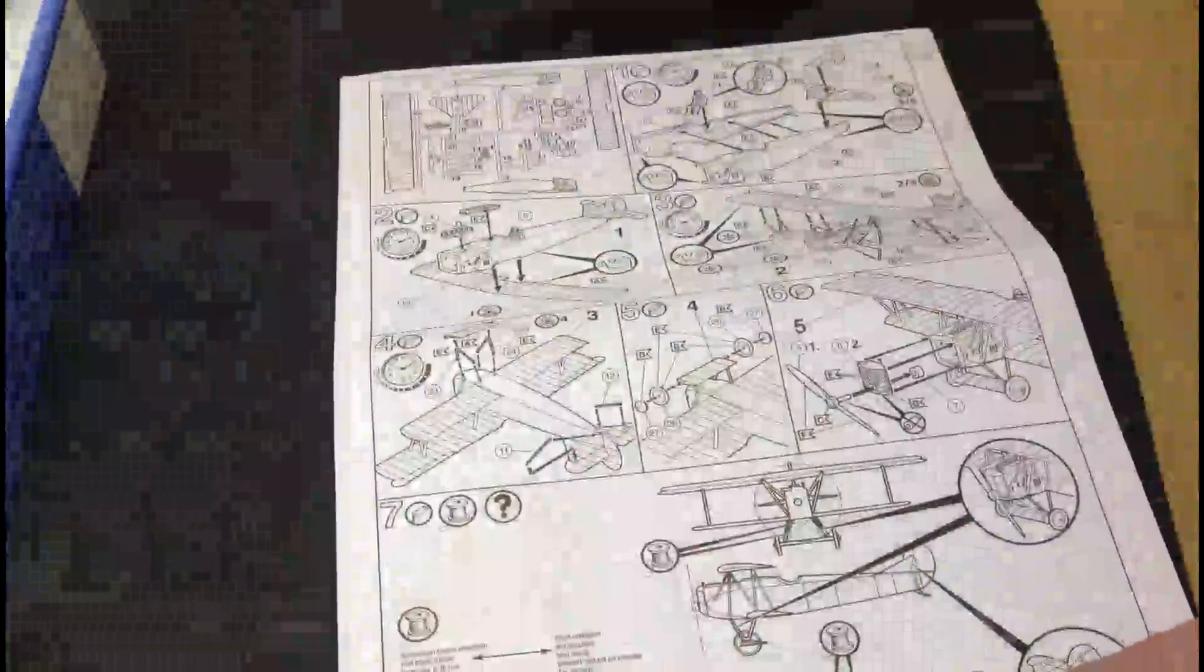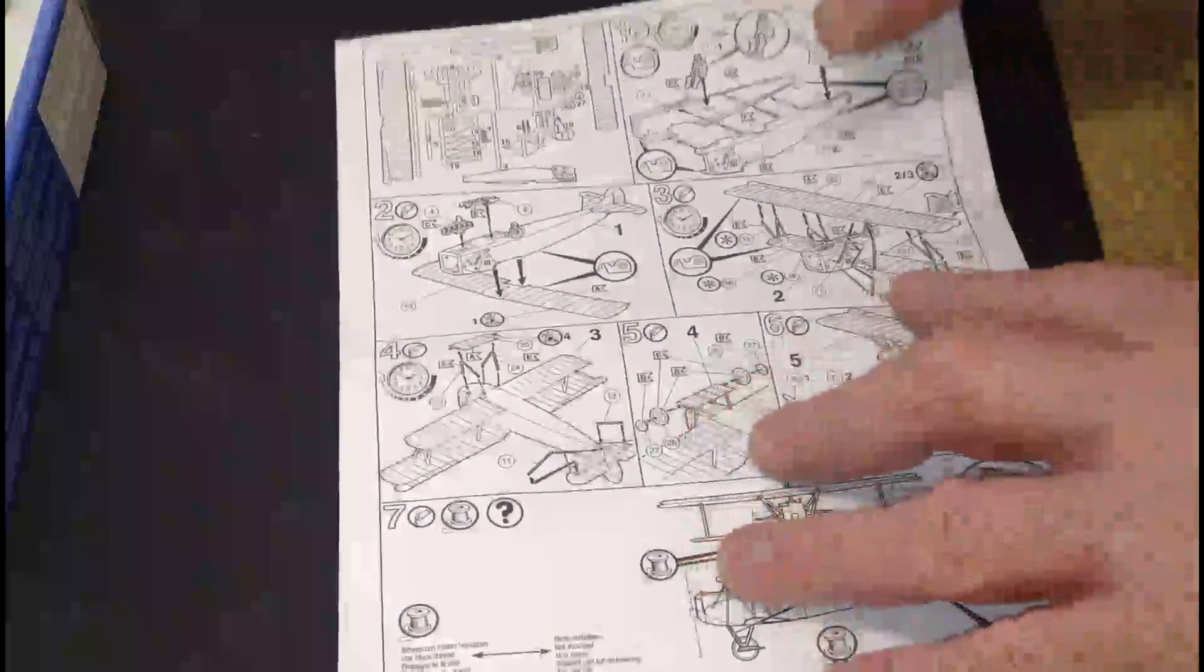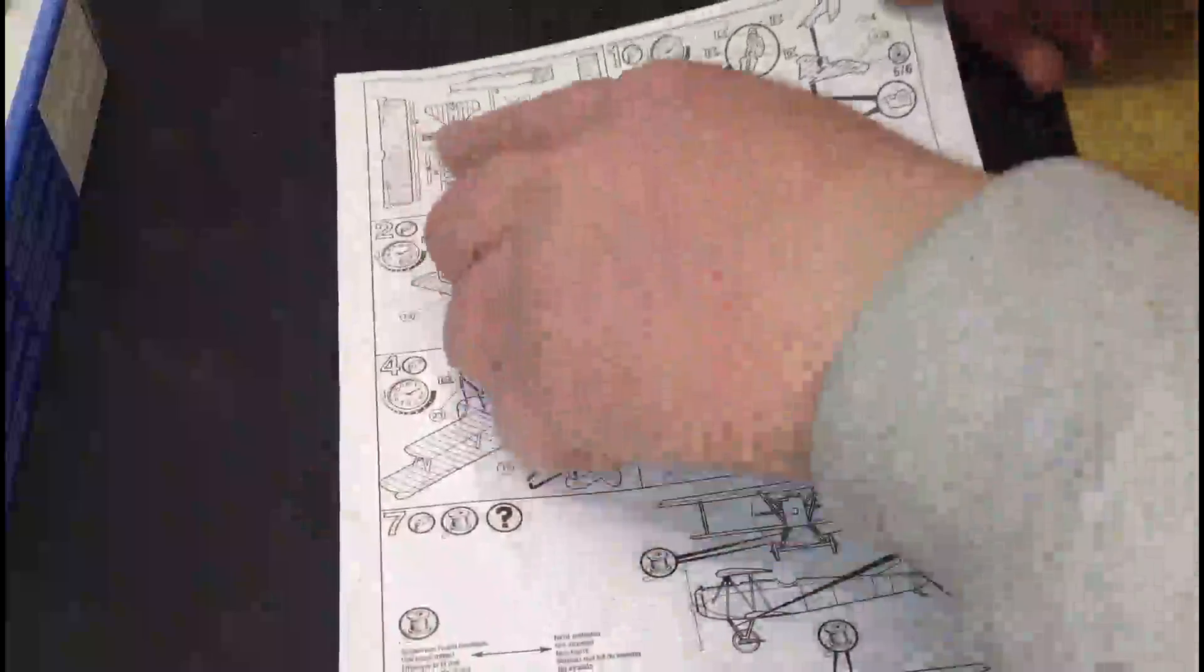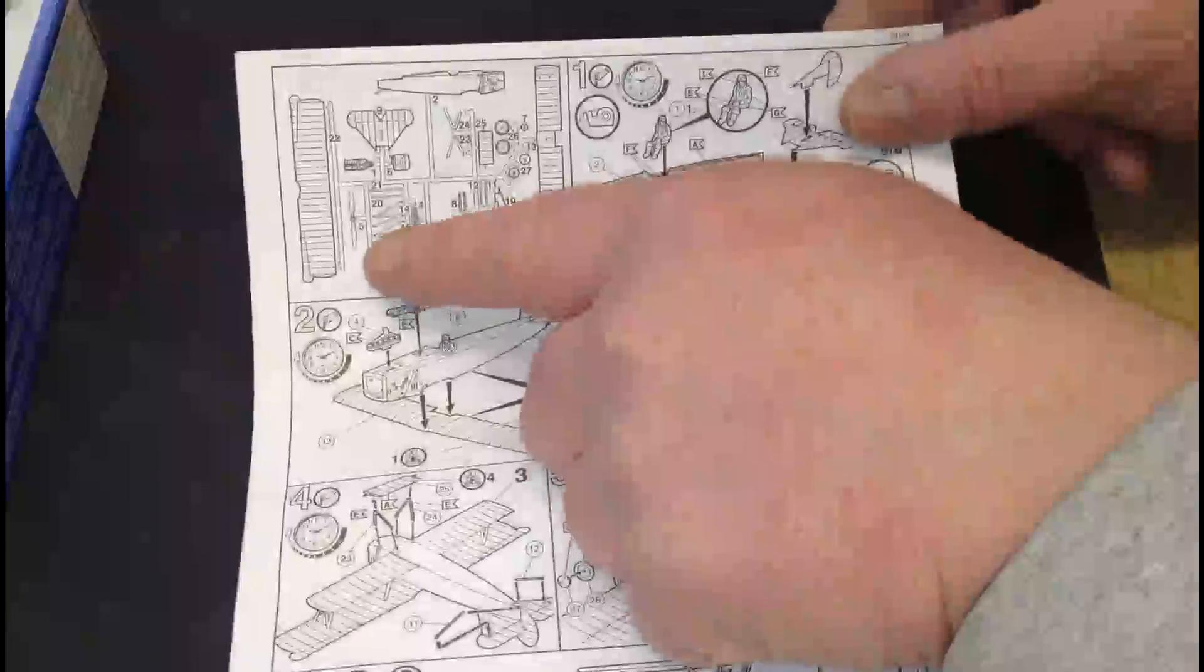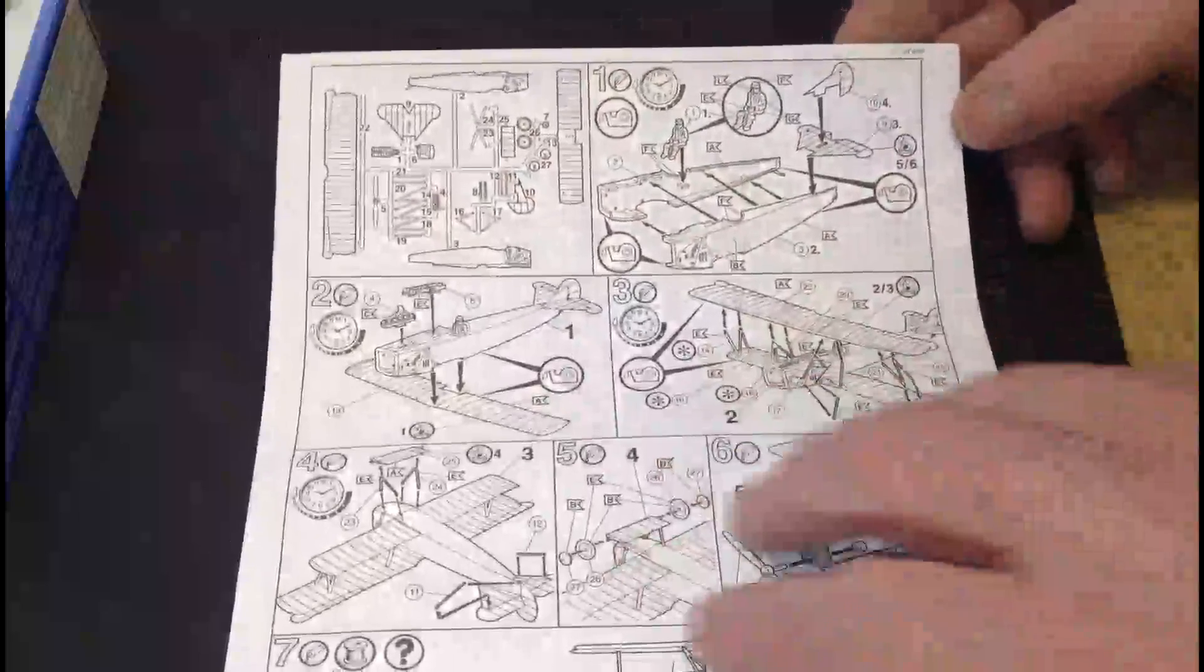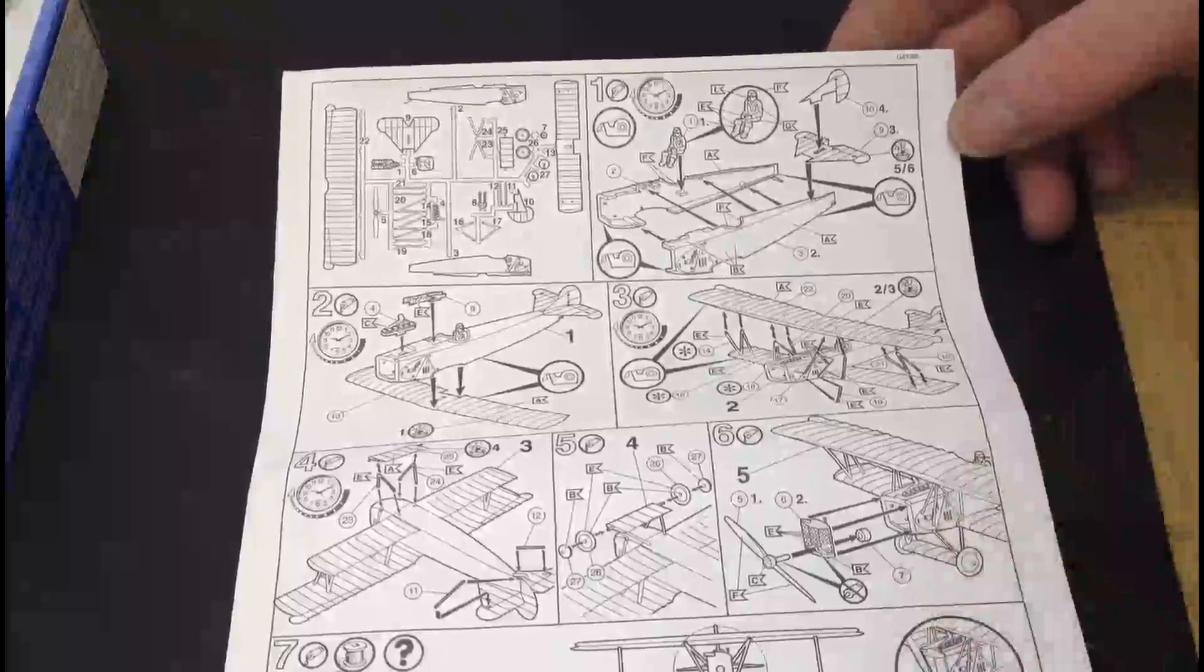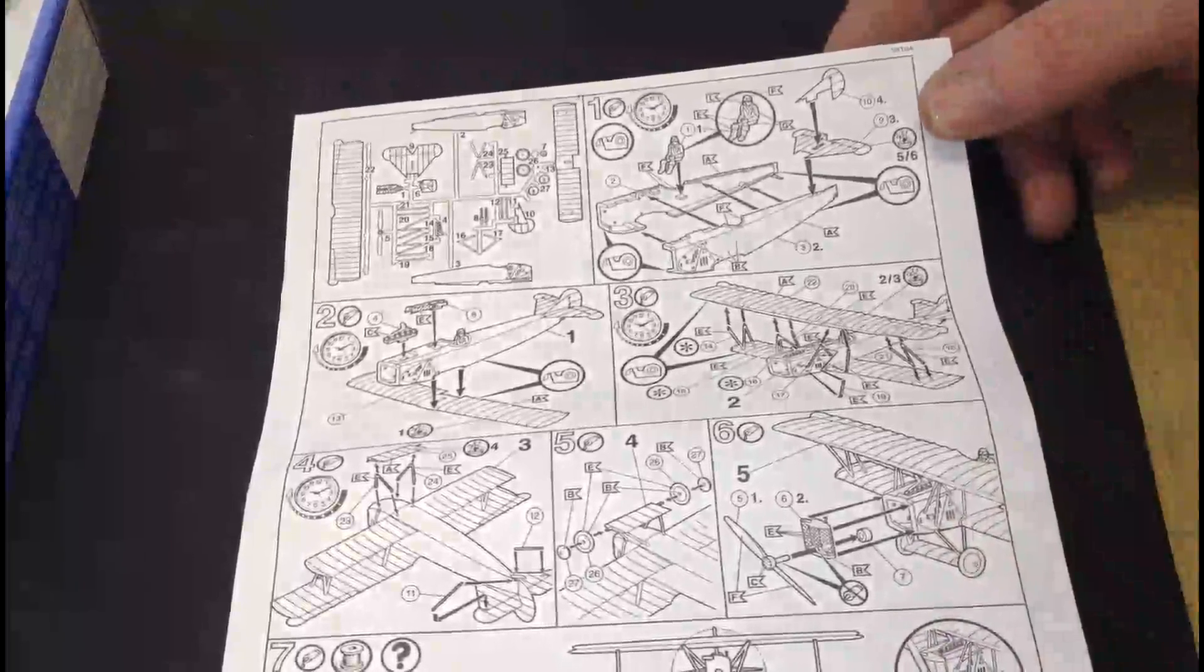It's one page with seven sections. It gives you the screw layout at the top there. Step one, to be honest, there's so little detail on it it'll probably take you about all of two minutes to build it, but you know.